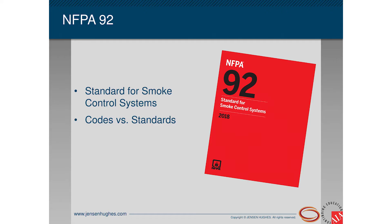NFPA 92 is the standard for smoke control systems. It is a standard and not a code. Standards are a recommended design and installation best practice for an overall industry — you'll see this on NFPA 72, 13, and 92. The building code tells you where a smoke control system is required. So first you go to the building codes — likely the IBC or NFPA 101 — and then find out whether the standard is adopted in your local jurisdiction.